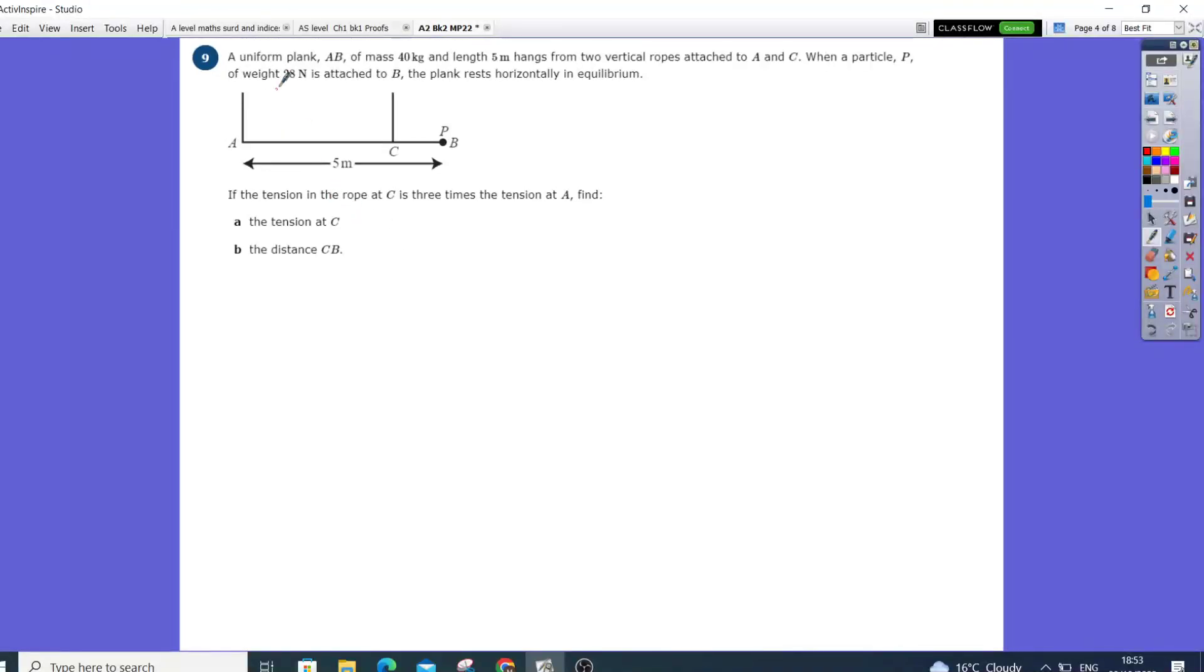Okay, let's have a quick look at this. We've got a uniform plank, 40 kilograms, so that's 40g coming down. The length is 5, so the center is going to be at 2.5 meters, since it's in the center.